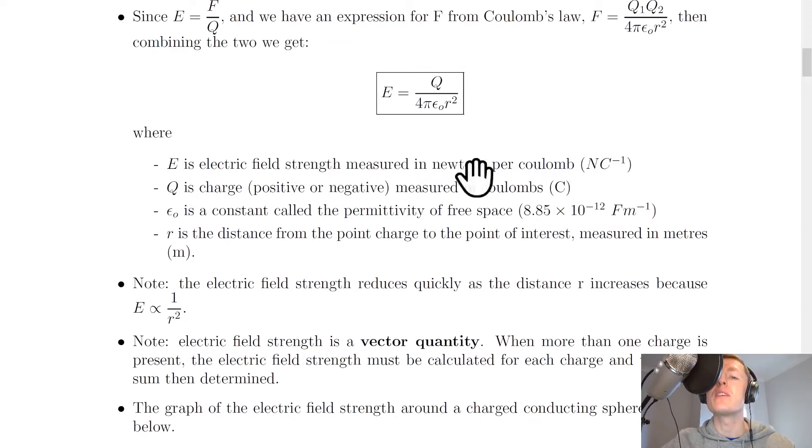Where E is electric field strength measured in newtons per Coulomb, Q is charge which can be positive or negative measured in Coulombs, epsilon not is a constant called the permittivity of free space, and R is the distance from the point charge to the point of interest measured in metres.